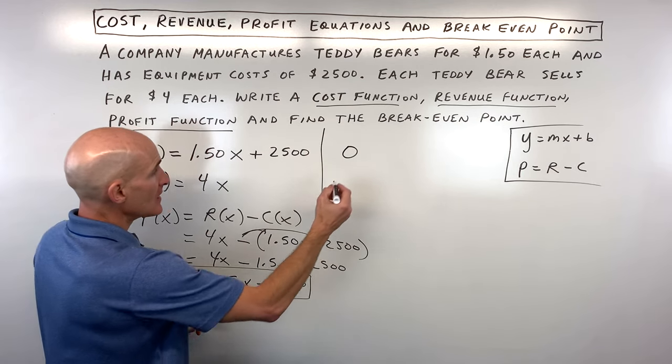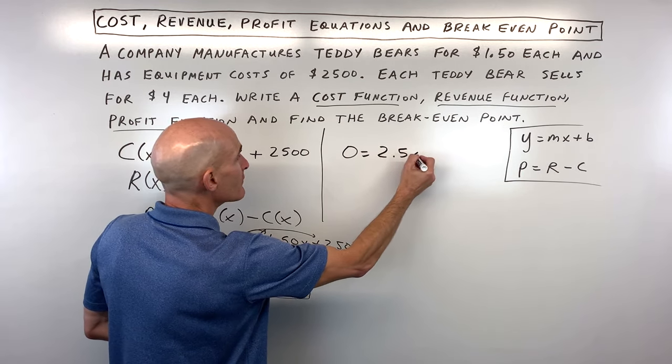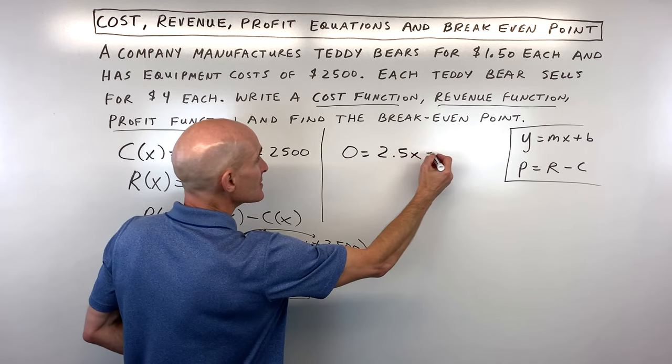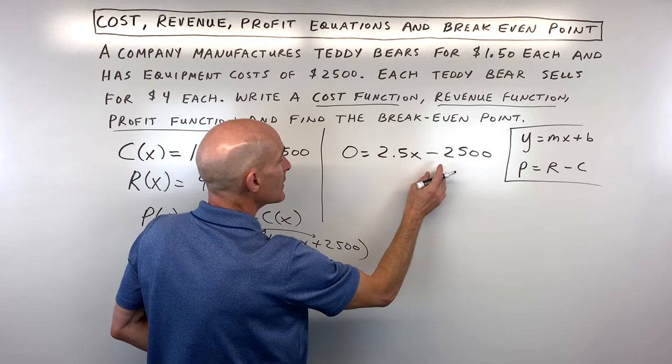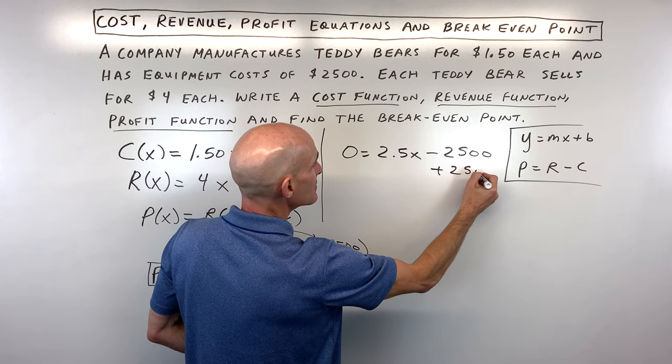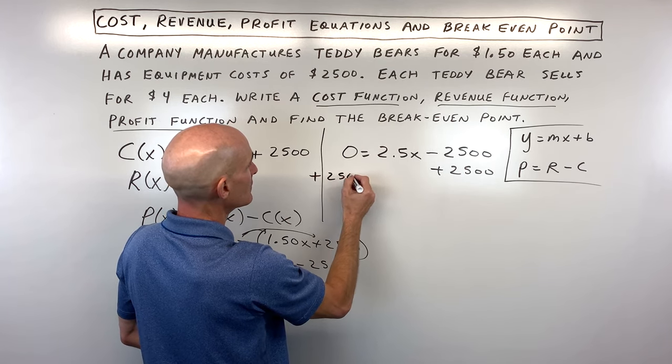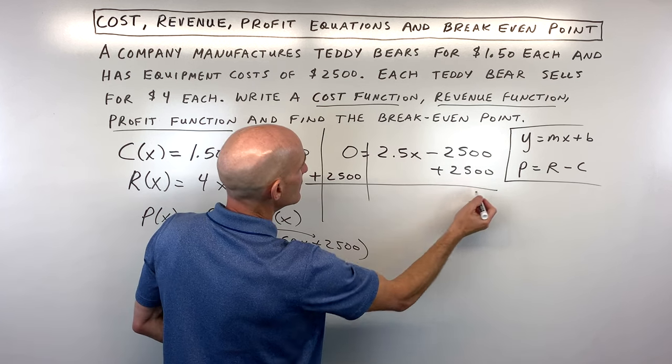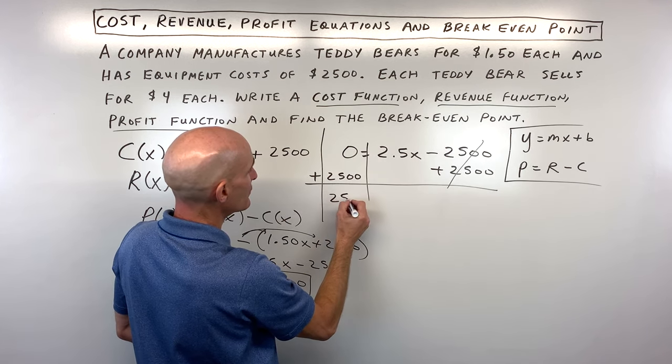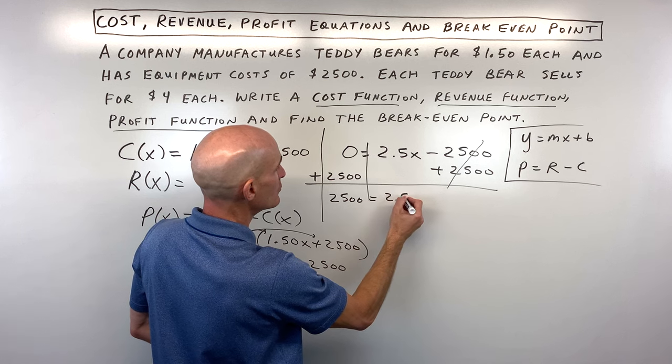We've got 0 equals 2.5X minus 2,500. I'm going to add the 2,500 to both sides to get the variable by itself. And so we have 2,500 is equal to 2.5X.